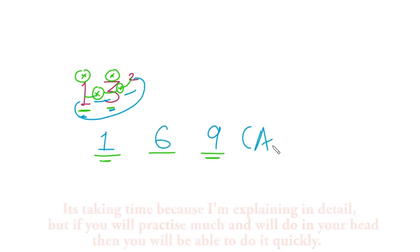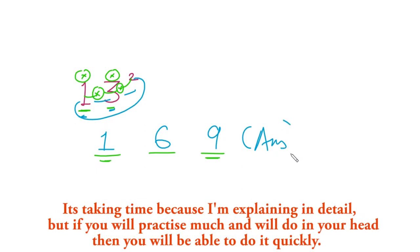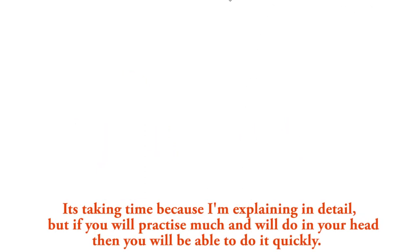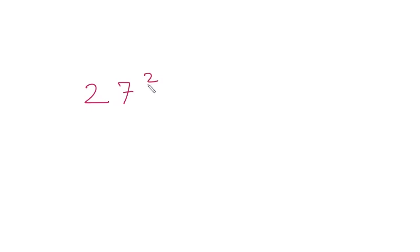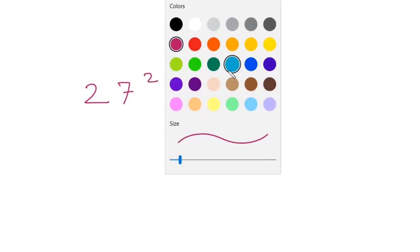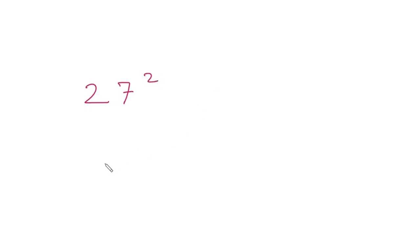So 169 is our answer. Let's take another number — say 27. We want to find the square of 27, so again we make three places like this.